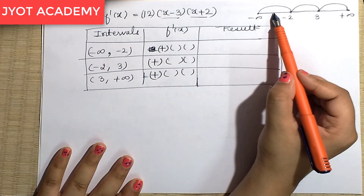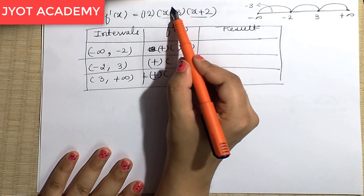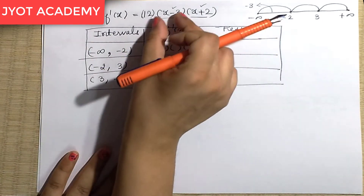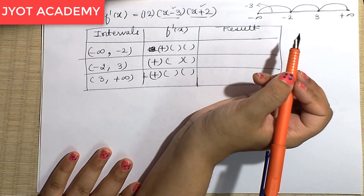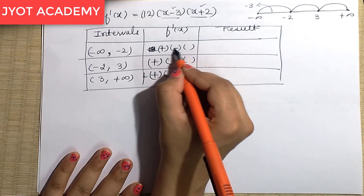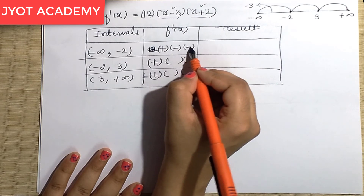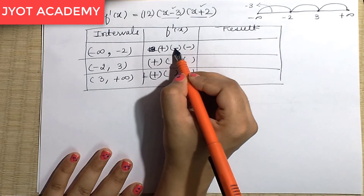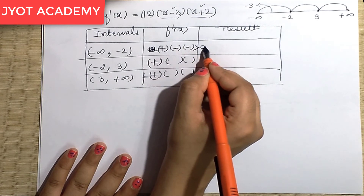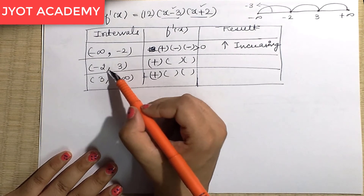For the interval (-∞, -2), I choose x = -3. Then (x - 3) = -3 - 3 = -6, which is negative, and (x + 2) = -3 + 2 = -1, which is also negative. So f'(x) = 12 × (negative) × (negative) = positive — greater than 0. Therefore f is increasing on (-∞, -2).